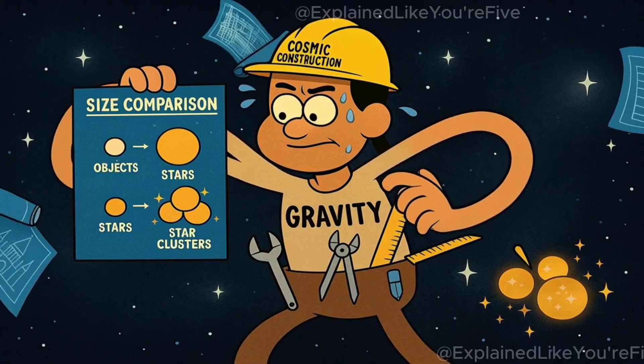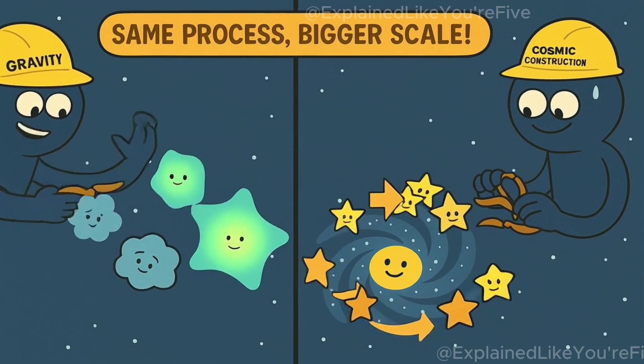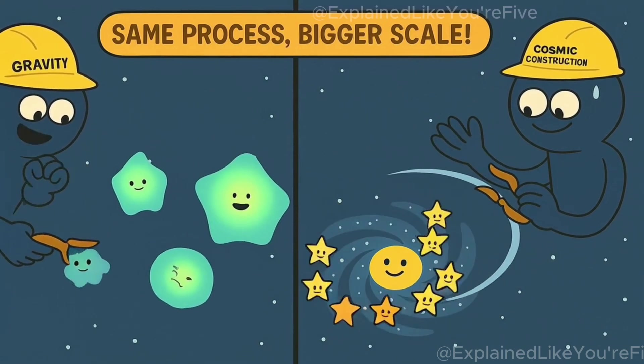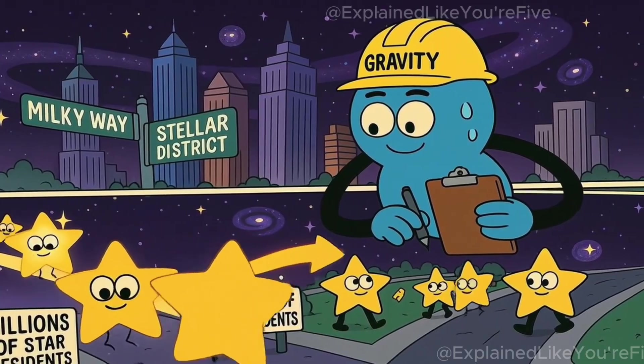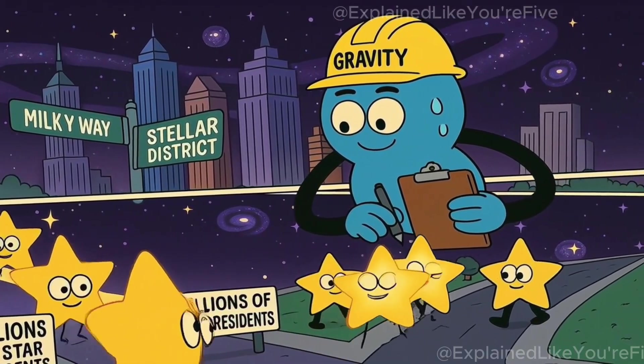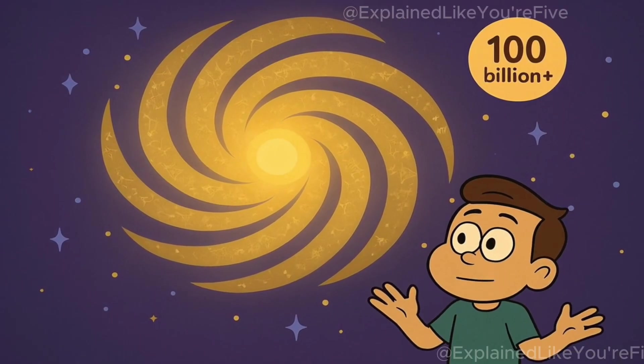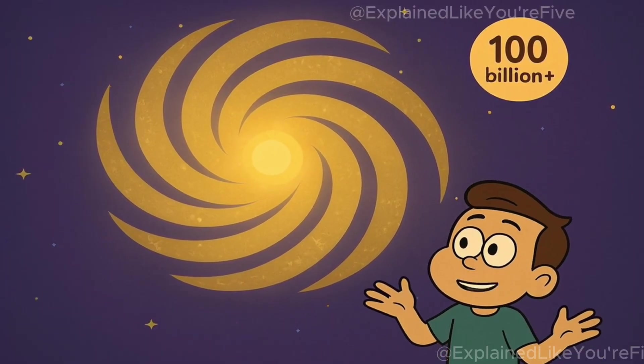Meanwhile, gravity was working on an even larger scale. Just like how it pulled gas together to form stars, gravity also pulled stars together to form galaxies. A galaxy is like a huge city of stars, containing billions or even trillions of stars, all held together by gravity. Our own galaxy, the Milky Way, contains over 100 billion stars.